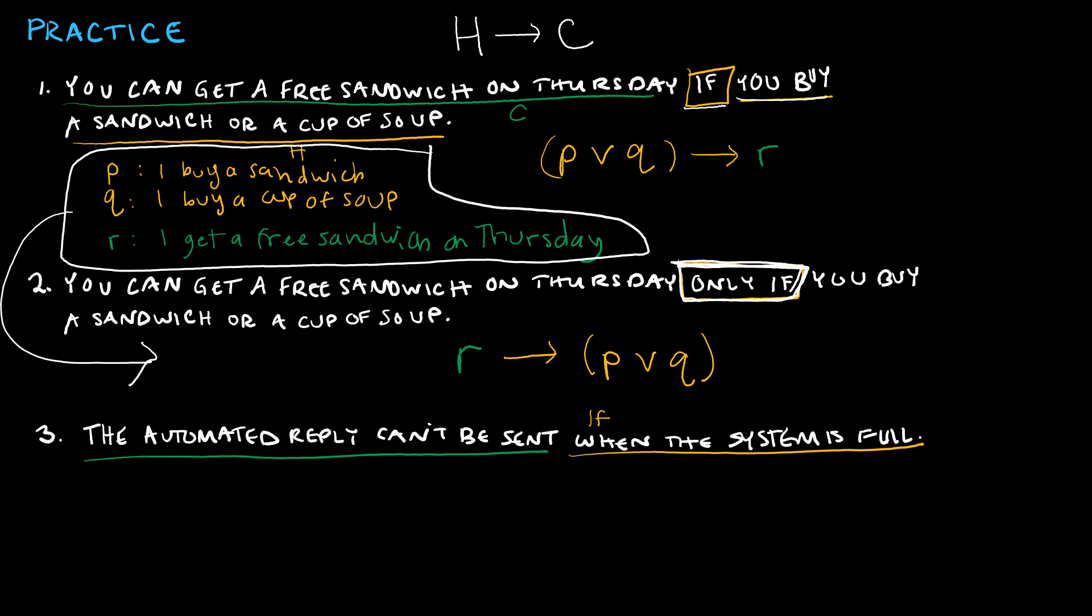If I let P represent the system is full and Q represent the automated reply can't be sent, then if P then not Q.